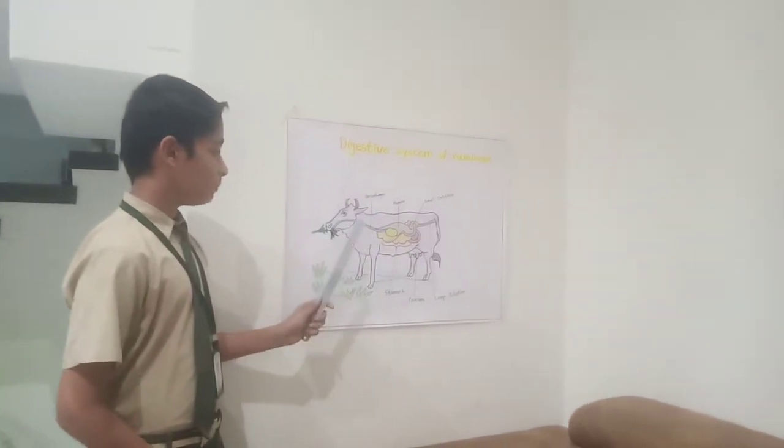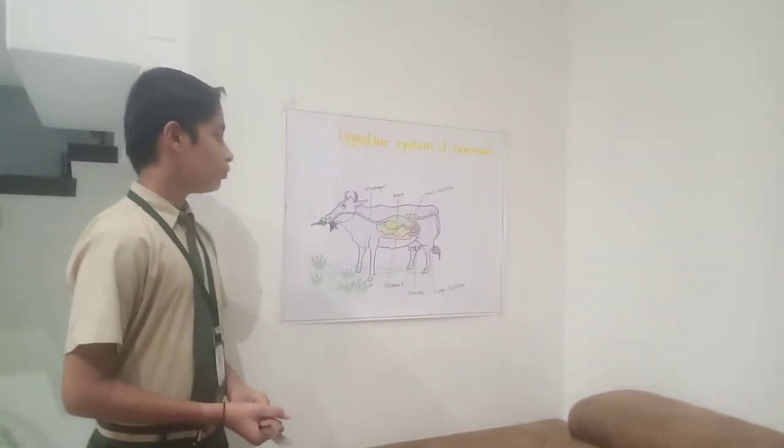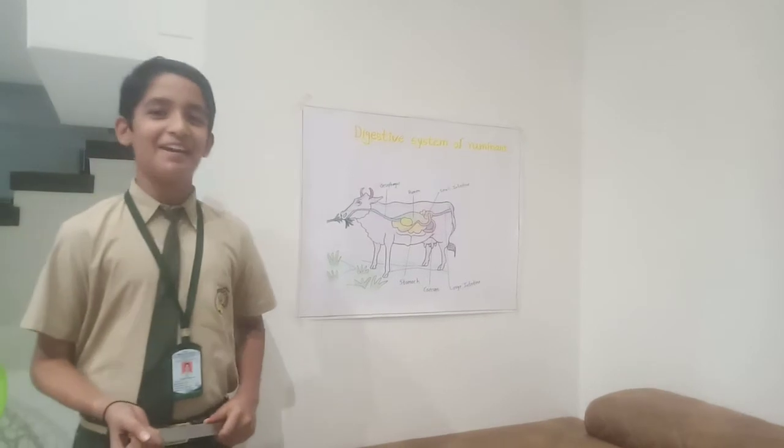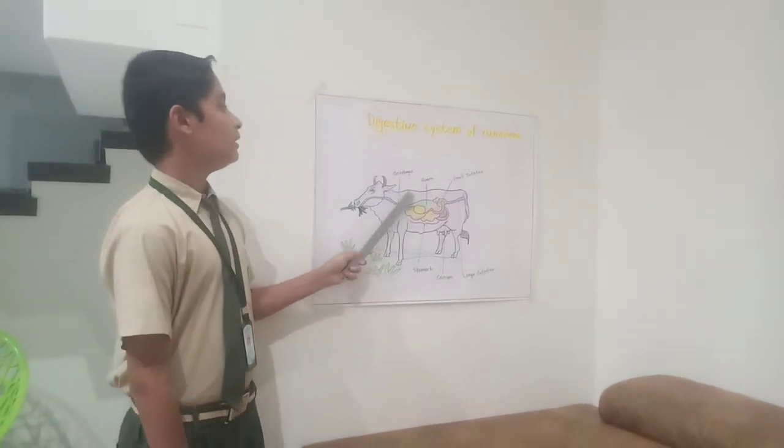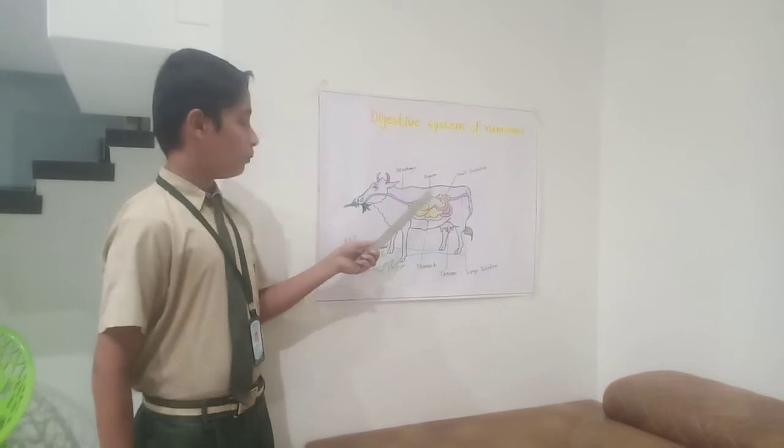Third is stomach. Stomach have four parts. They are rumen, reticulum, omasum and abomasum.